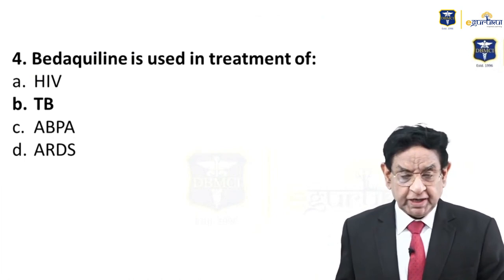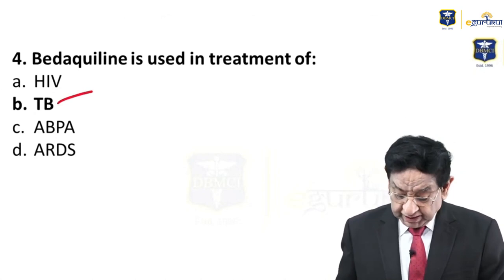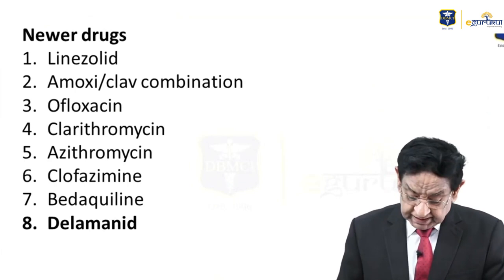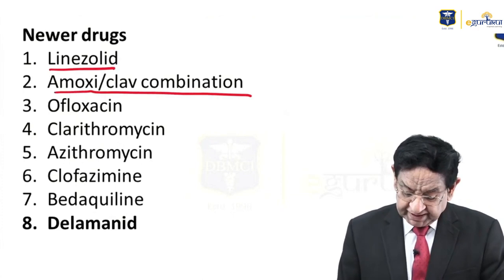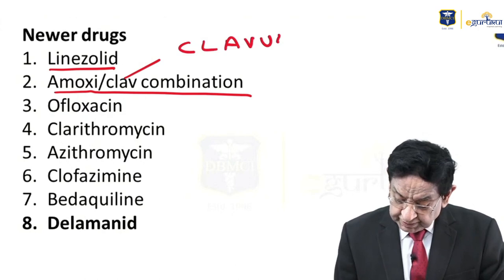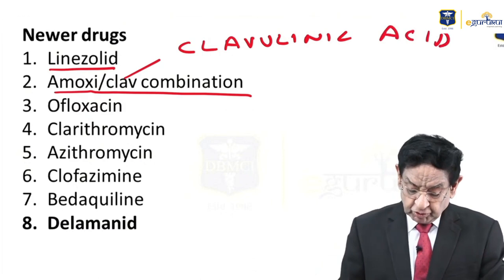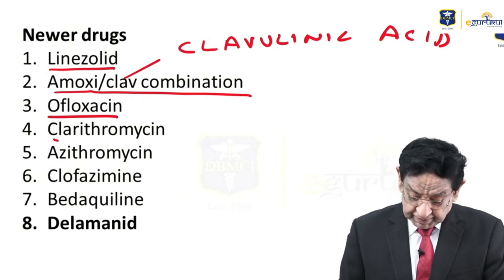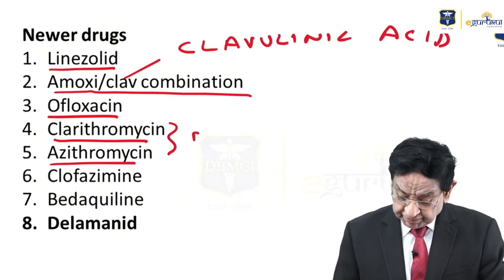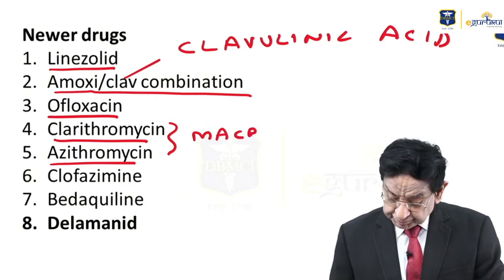Bedaquiline is a new drug used in tuberculosis — a recent advance that will surely come in your exam. Newer drugs used in tuberculosis include linezolid, amoxicillin-clavulanic acid, ofloxacin, clarithromycin, and azithromycin. Clarithromycin and azithromycin belong to the macrolide group from pharmacology.